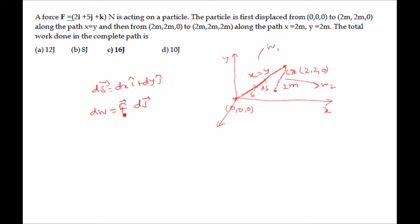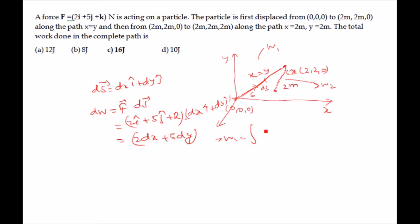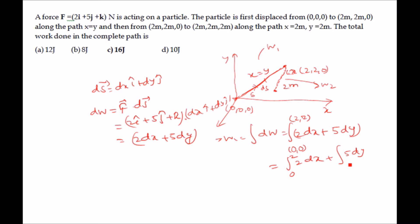The infinitesimal work done is dW = F · ds = (2i + 5j + k) · (dx·i + dy·j), giving dW = 2dx + 5dy. So W1 = ∫(2dx + 5dy) with limits from (0,0) to (2,2), which equals 2x from 0 to 2 plus 5y from 0 to 2.